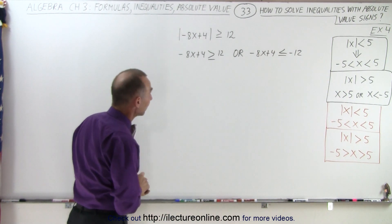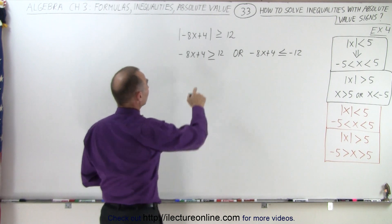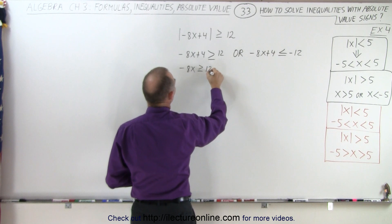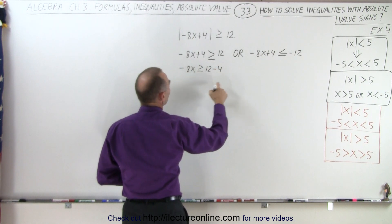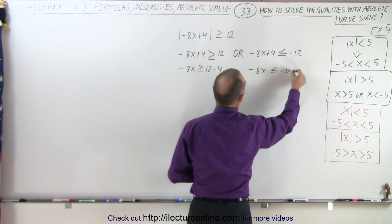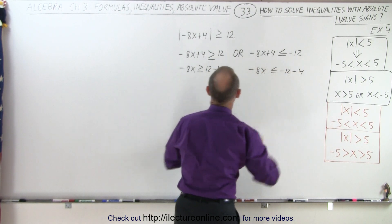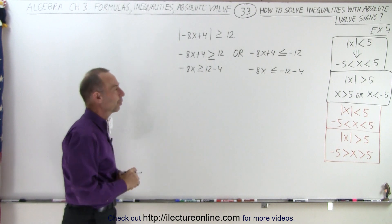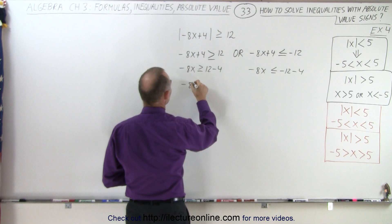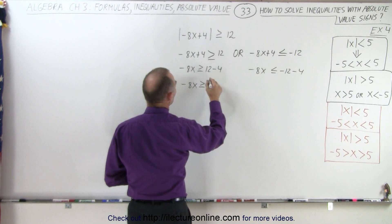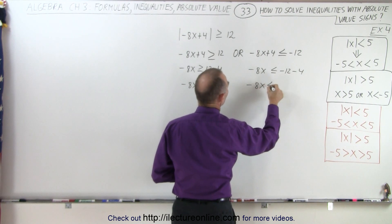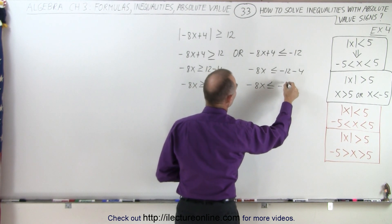So now we have to solve those independently. First, we're going to bring the 4 to the other side, so we end up at minus 8x greater than or equal to 12 minus 4. And over here we have minus 8x less than or equal to minus 12 minus 4. So we move the plus 4 to the right, it became minus 4. Now we combine what we have on the right side: minus 8x greater than or equal to 8, and over here minus 8x less than or equal to minus 16.